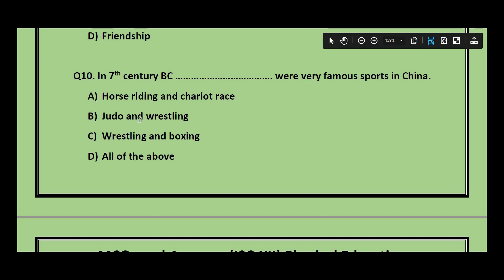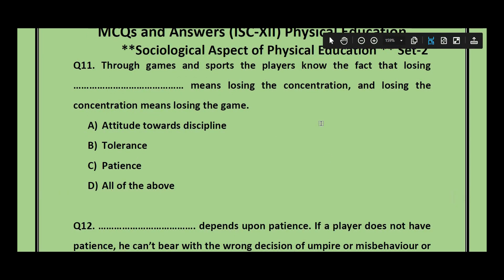Question number 10: In the 7th century BC, __ were very famous sports in China — horse riding and chariot race, judo and wrestling, wrestling and boxing, or all of the above? The answer is wrestling and boxing. Question number 11: Through games and sports, players know that losing __ means losing concentration, and losing concentration means losing the game. The options are attitude towards discipline, tolerance, patience, or all of the above. The answer is patience.